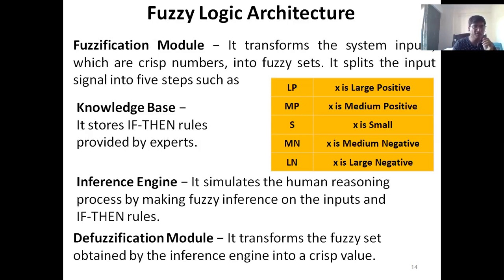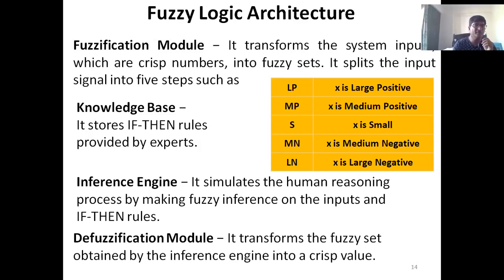That is what humans do. Whenever some question or query comes in, we have our own set of if-then rules, our own set of logics stored as a knowledge base. By applying those rules, we make a conclusion about what we got as input. The inference engine is therefore the heart of any fuzzy system.